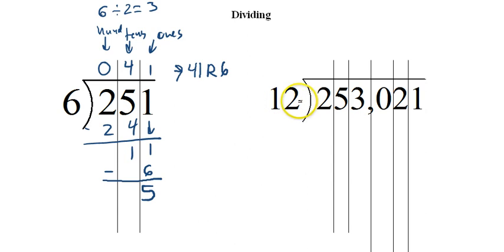We have 12 now. So 12 into 2 doesn't work. 12 into 25. The reason I'm putting a 0 is just to hold a value. There's nothing there, but we want to make sure we don't miss anything. So 12 into 25 is 2. That's 24. And that gives us 1. Bring down the 3. 12 into 13 is 1, which gives us 12.